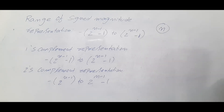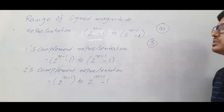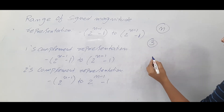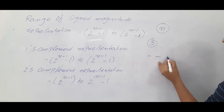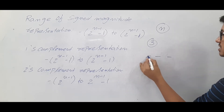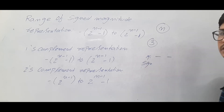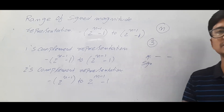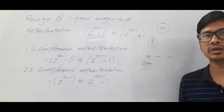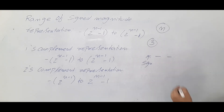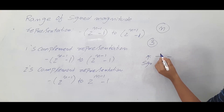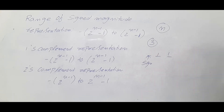Let's take an example: I have three bits, so n = 3. Out of three bits, I am keeping one bit for the sign. Because if it is a positive number we keep the sign bit as 0, and if it is a negative number we keep the sign bit as 1. So the maximum value I can keep in the remaining two bits is 11.